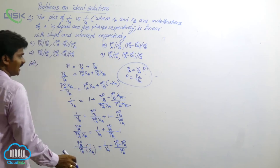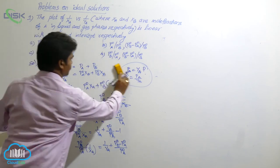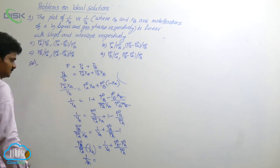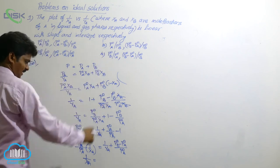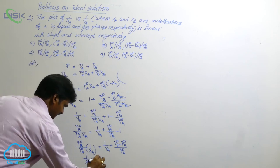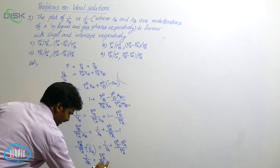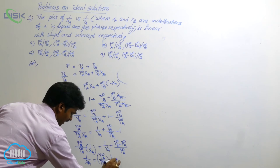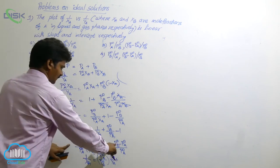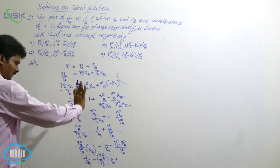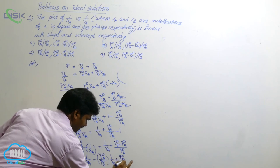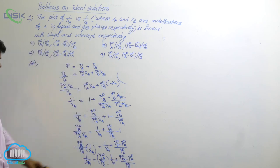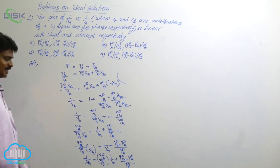Next, if you rearrange this one, you will get, now what is that? 1 by XA equals to, take P naught B by P naught A that side. 1 by XA is equal to, here, P naught A by P naught B into 1 by YA plus there. Already P naught B minus P naught A by P naught A. Here P naught A, P naught A get cancelled. Then P naught B minus P naught A by P naught B you will get. You know, this relation resembles Y is equal to MX plus C.